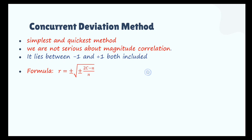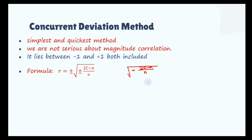What does it mean? While calculating (2C minus N) divided by N, if this value comes out to be negative and you have to take the square root, we cannot take the square root of a negative number. Then what you should do is take the minus sign outside. Calculate with the positive number and whatever the answer is, write it as minus. So this is statistics, not mathematics. The plus or minus outside means: if it is plus inside the square root, write plus; if it is minus inside the square root, write minus.